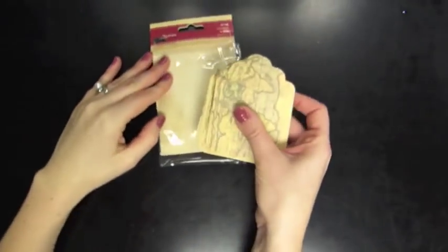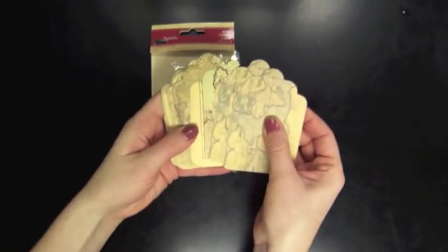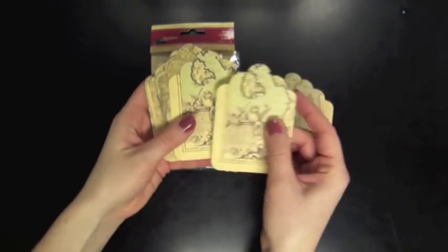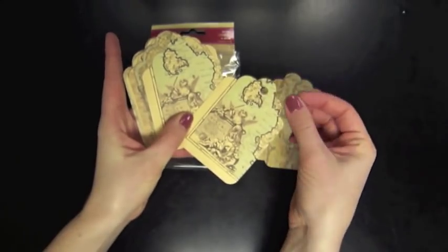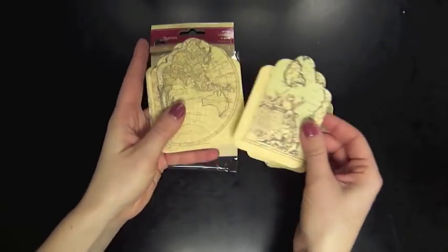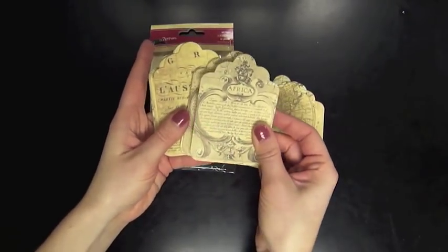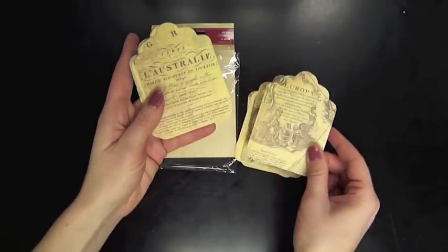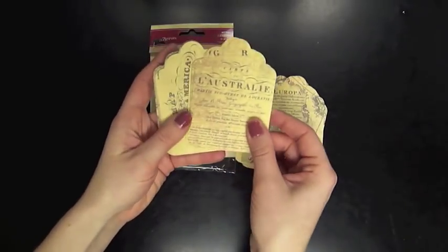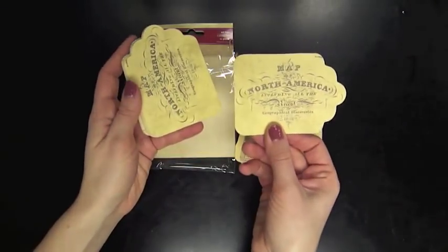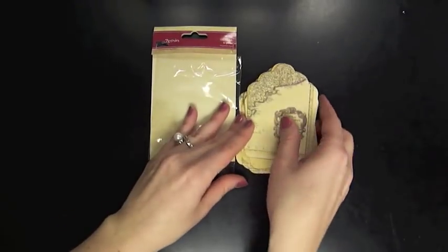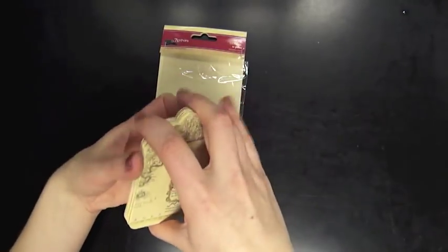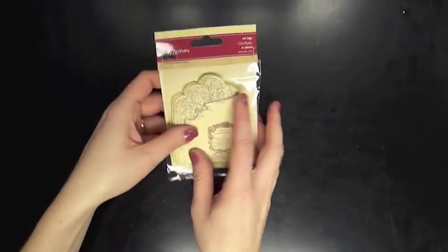We also have these tags from Seven Gypsies. These are the Global Art Tags. You get quite a few in here and they have the scalloped edge. Then you can punch a hole through there, tie it with ribbon, just use it as an interesting photo mat. There's all different kinds of destinations on there. Definitely gives you a travel feel like you're setting out on a journey.